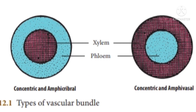Looking at the pictures: the first picture shows a concentric amphicribral bundle in which phloem is surrounded by xylem. That is an example for concentric amphicribral. The second picture shows amphivasal, in which phloem is surrounded by xylem — that is concentric amphivasal vascular bundle.